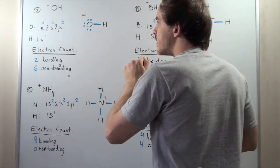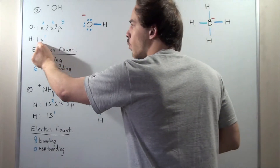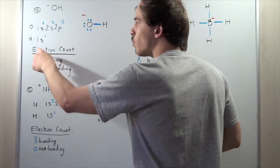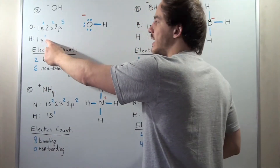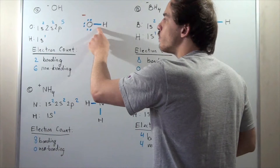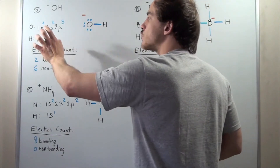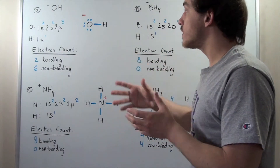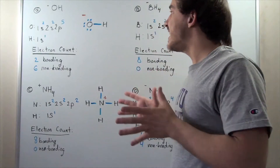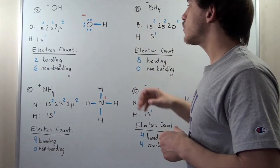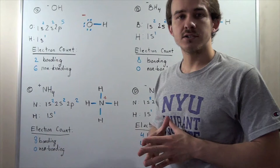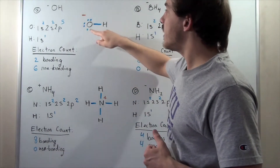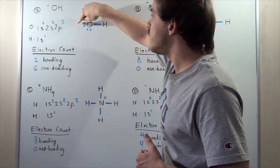This means the 1s orbital of H is completely filled — before it had one electron, but now this electron is shared, giving two electrons in the 1s shell, so all orbitals of H are completely filled. We can't place any more electrons around H. Oxygen, however, has more orbitals — when this orbital is filled, it has three more orbitals.